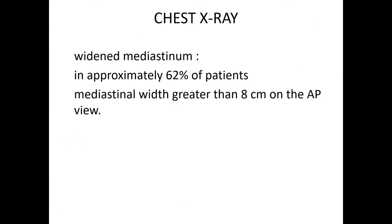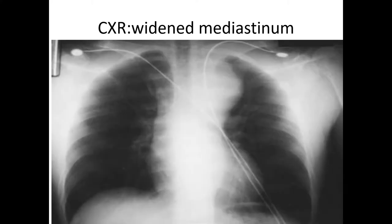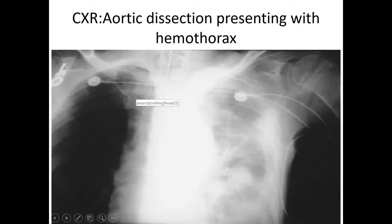Regarding the chest X-ray: in 62% of patients, you may see widening of the mediastinum. A wide superior mediastinum should raise suspicion. In one example, this patient had aortic dissection with hemorrhage into the left pleura due to rupture, showing widening of the mediastinum and haziness of the left pleural space.